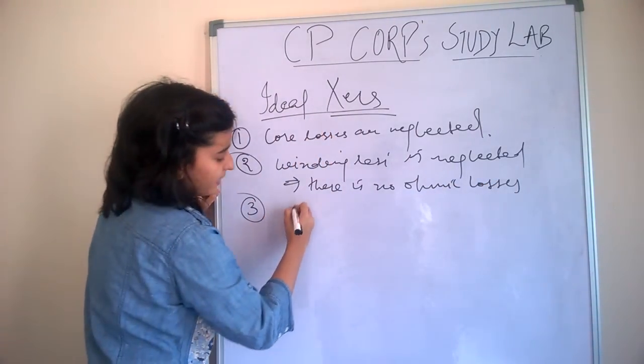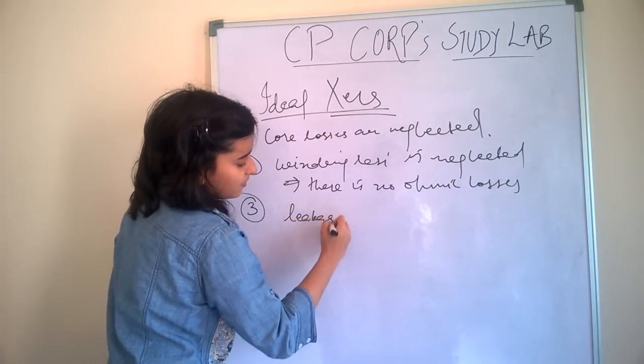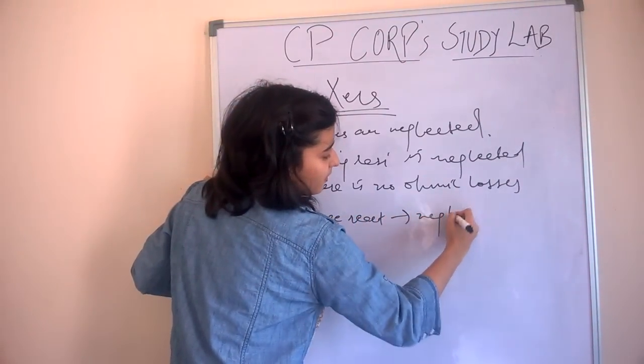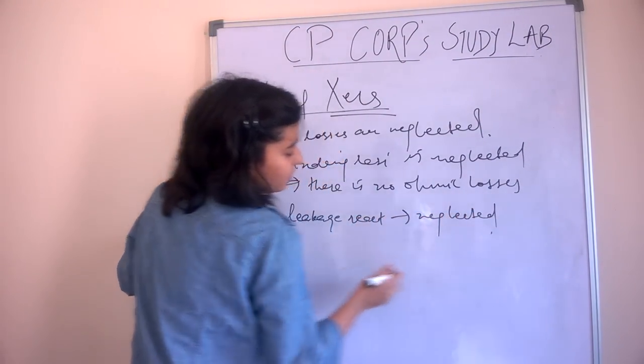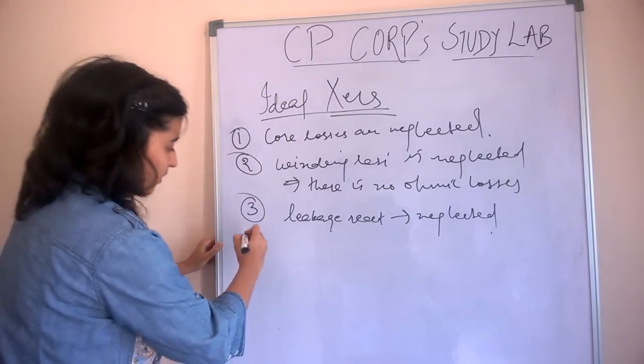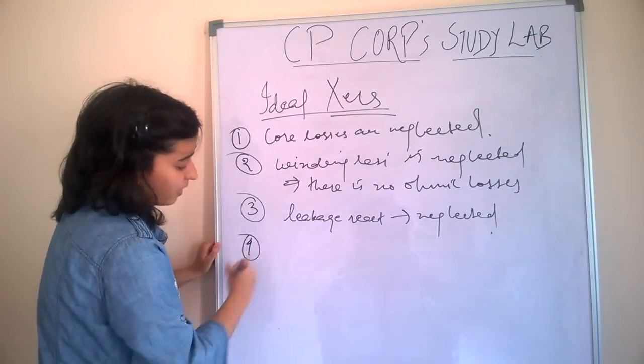Early leakage reactance is neglected, means the flux produced in the core is assumed to be confined in the core only.